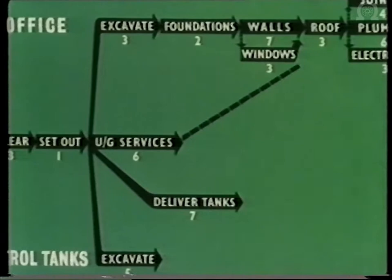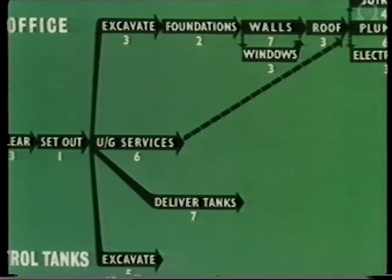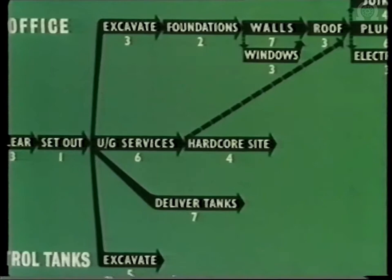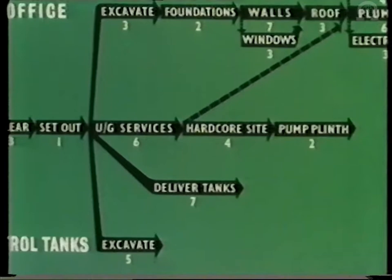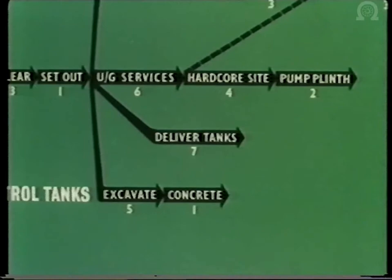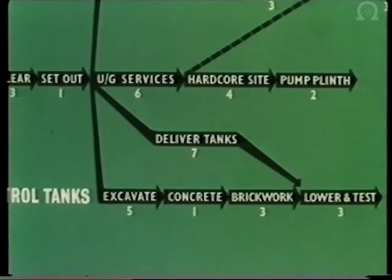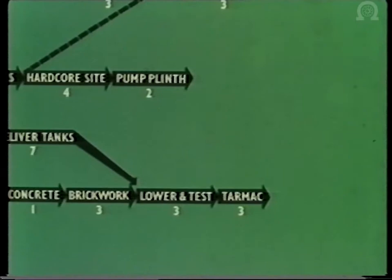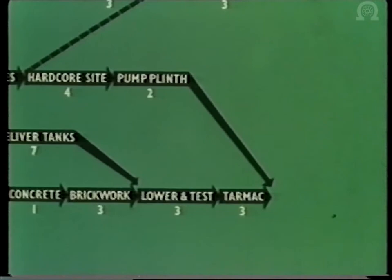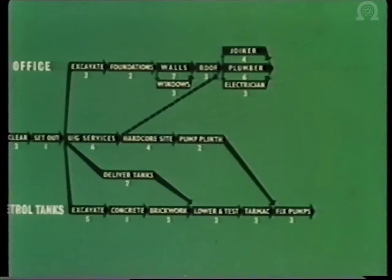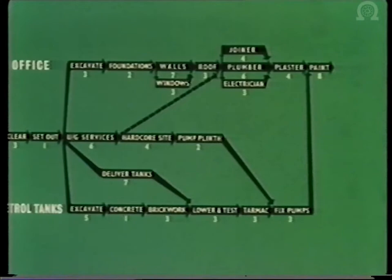Dummies have no time set to them. They are brought into the diagram to show the logical sequence of thought and of events. After the underground services have been finished, the site can be covered with hard core and then the pump plinth constructed. Next, the petrol tanks: after excavation, the bottom can be concreted and the sides bricked up. Now the tanks are ready to be lowered, assuming that they were delivered on time. The next job is to tarmac the site. By this time, the pump plinth should have been finished and then the pumps can be fixed. The job is well ahead now and when all the services have been completed in the office, the plasterers can get to work. By now, the pumps should have been fixed. The whole job must be painted and then it will take a few days to clean out the site.